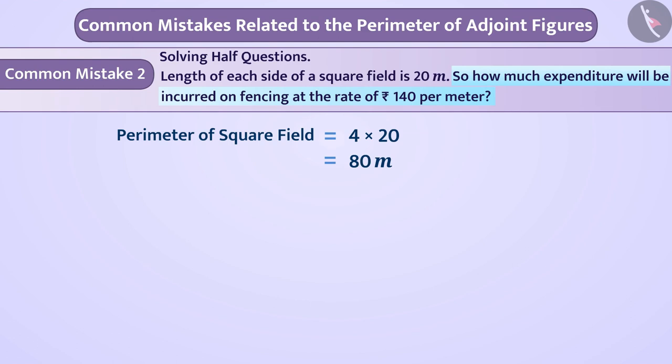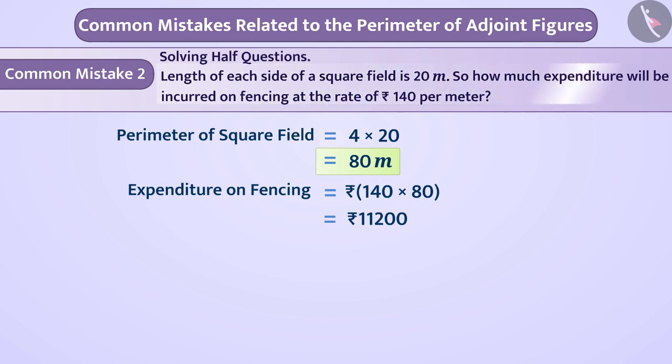Like here, they know the perimeter but forget to find the cost of the fencing. Expenditure on fencing is equal to 140 rupees multiplied by 80 is equal to 11,200 rupees. To avoid this kind of mistakes, one should solve the questions keeping in mind what has been asked in the question.